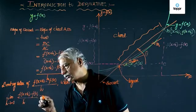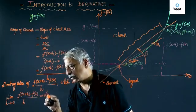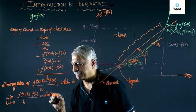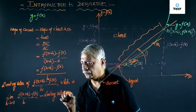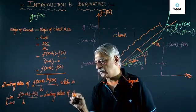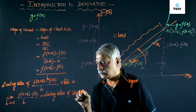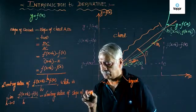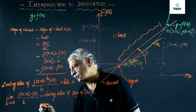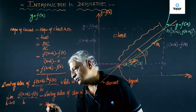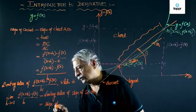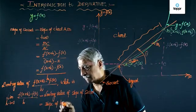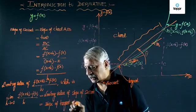This is the limiting value of slope of secant, and this is nothing but the slope of tangent at A.